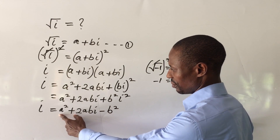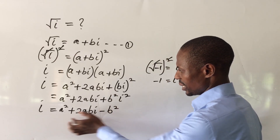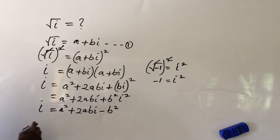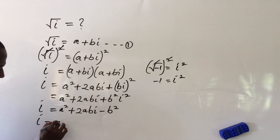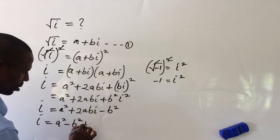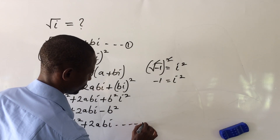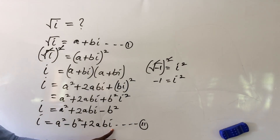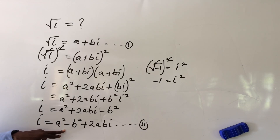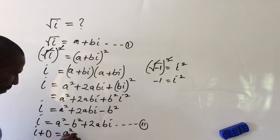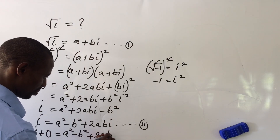Now let's look at this carefully. The a² and −b² are real number parts, and 2abi is the imaginary part. Grouping these, we can rewrite this as: i = (a² − b²) + 2abi. To compare real and imaginary parts, we rewrite the left side as 0 + i, giving us: 0 + i = (a² − b²) + 2abi. Let's call this equation two.